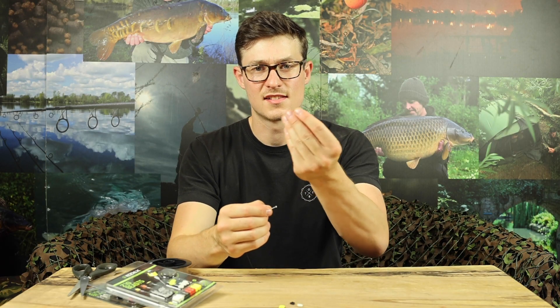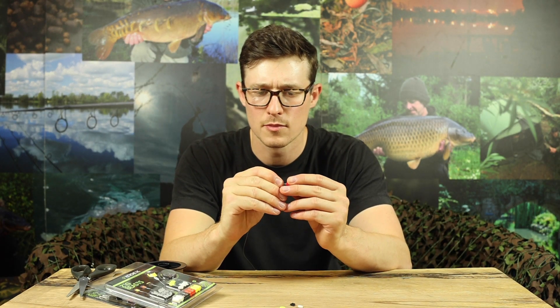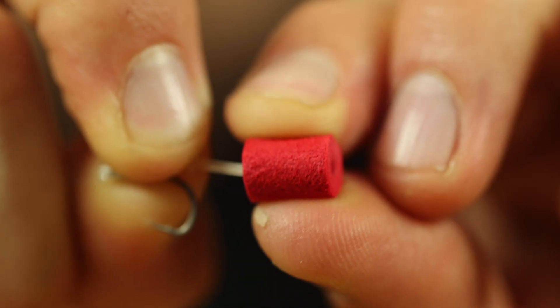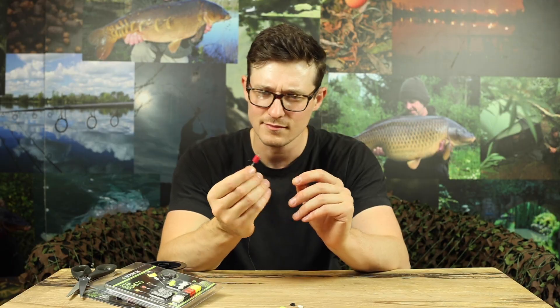Now the next job is to take one of the buoyant barrel hook baits and with the stem just push it through the central hole of the barrel hook bait. It's now sat on the stem as you can see.